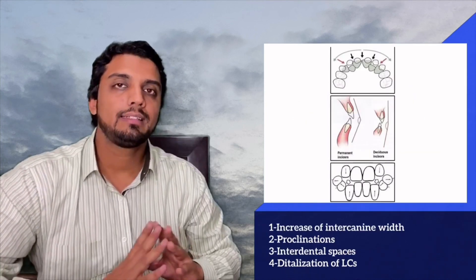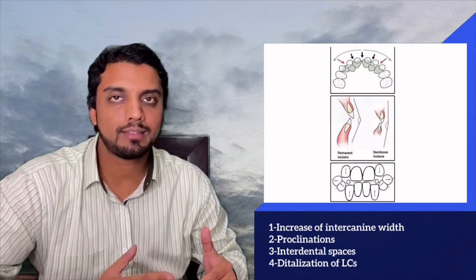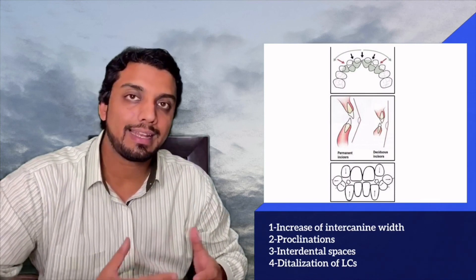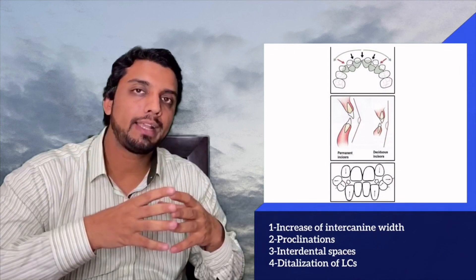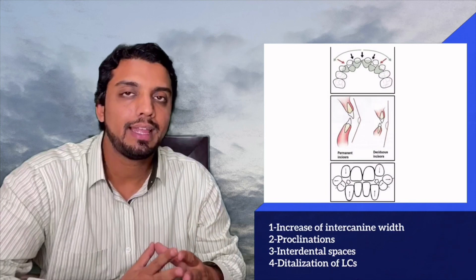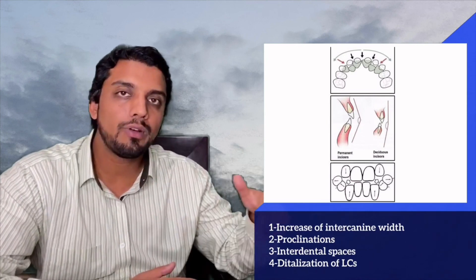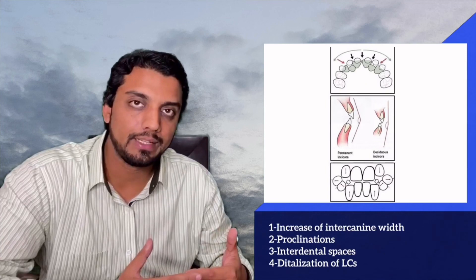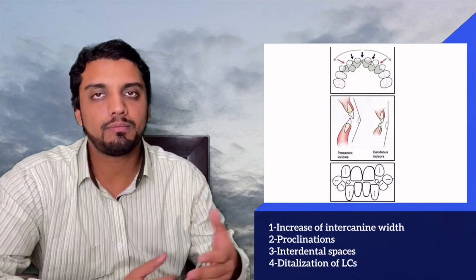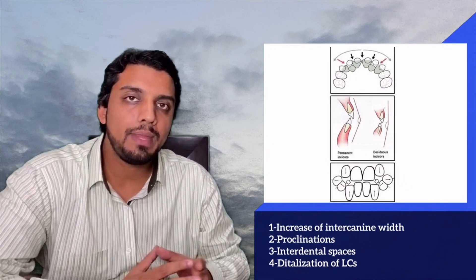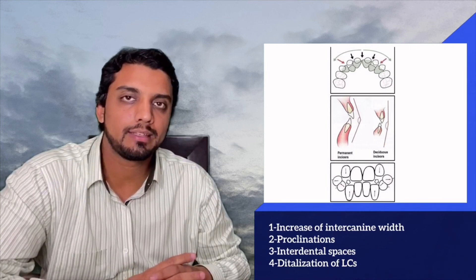To summarize, incisor liability is the difference in the sizes of the permanent and primary incisors, and it is accommodated by several features: the increase in intercanine width through jaw growth and labial eruption of the permanent canine; the proclination of the permanent incisors placing them in an arch of greater circumference; the distal repositioning of the lower primary canine; and the primary and primate spaces — especially in the maxilla — which are utilized for adjustment of the permanent incisors of increased mesiodistal dimension. That is how incisor liability is accommodated. Thank you very much.